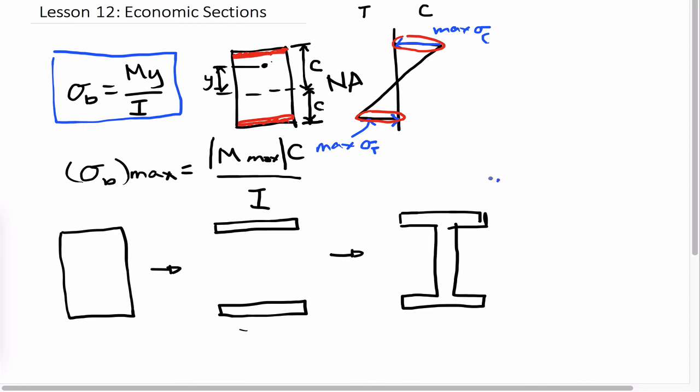we call this part the flange. And this part is the web. So this formula, the flexure formula and the analysis of the stresses is actually the reason why we have this structural shape, the wide flange or the W shape, also known as the wide flange.